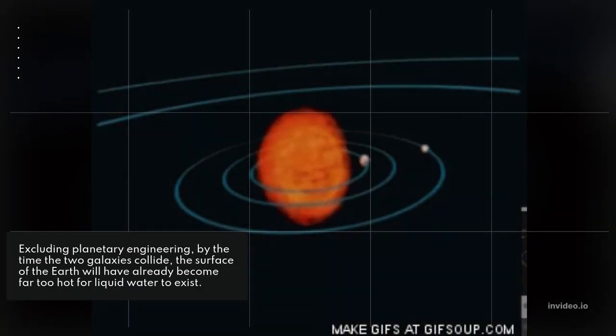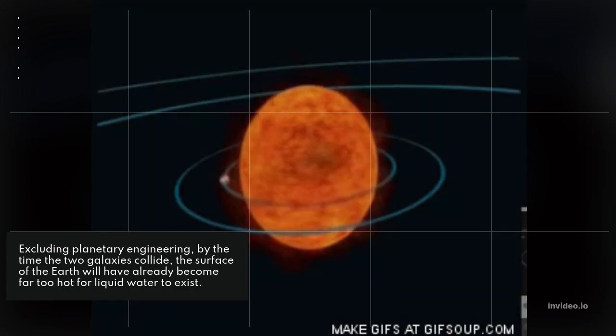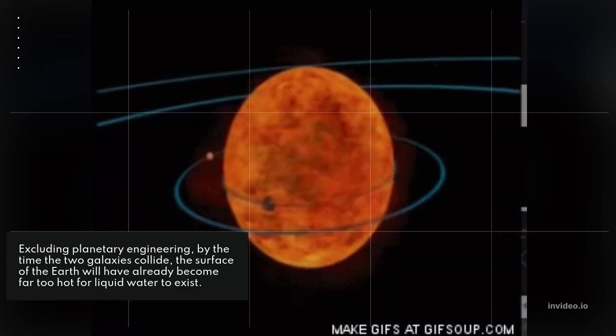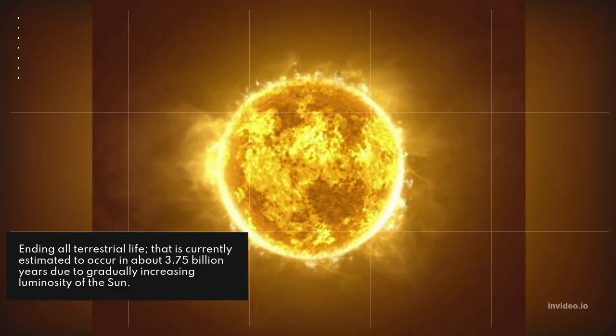Excluding planetary engineering, by the time the two galaxies collide, the surface of the Earth will have already become far too hot for liquid water to exist, ending all terrestrial life. This is currently estimated to occur in about 3.75 billion years due to the gradually increasing luminosity of the Sun.